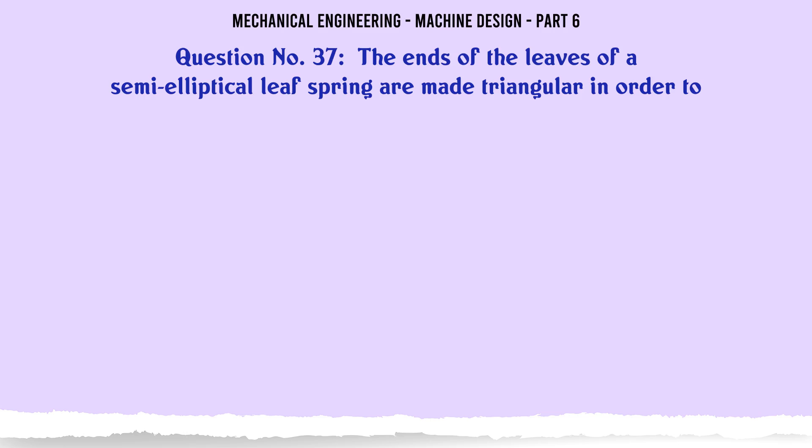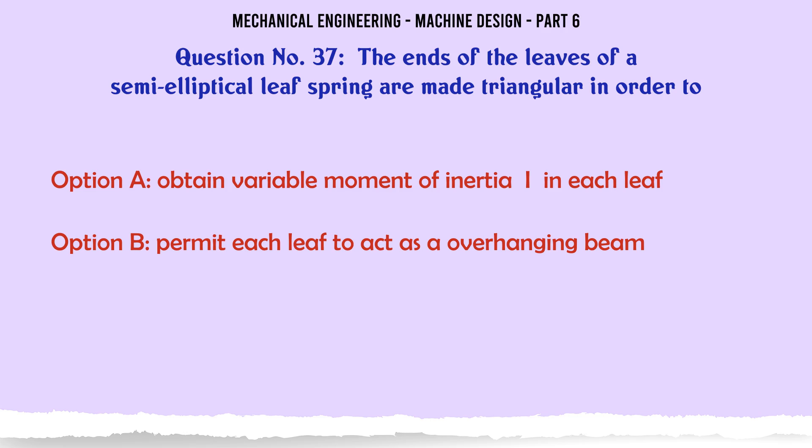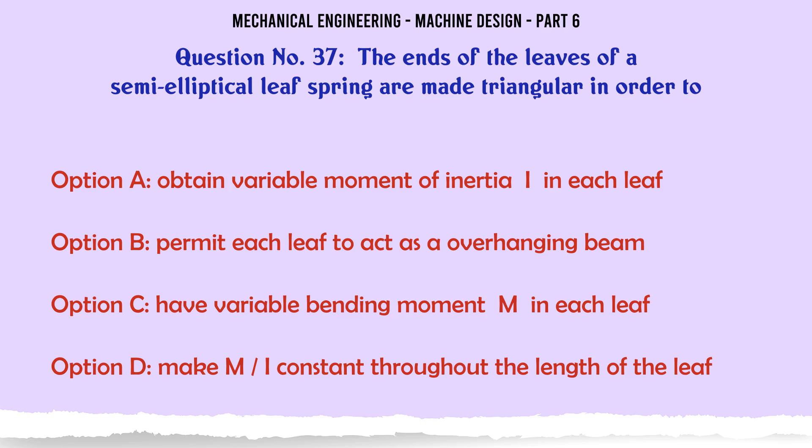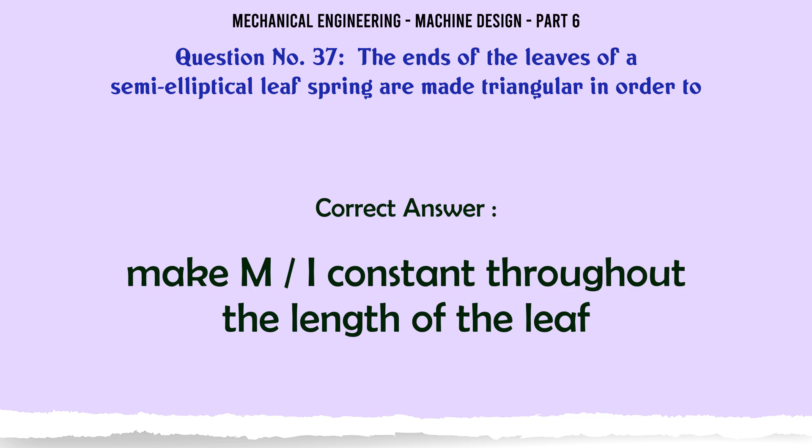The ends of the leaves of a semi-elliptical leaf spring are made triangular in order to: A) obtain variable moment of inertia I in each leaf, B) permit each leaf to act as an overhanging beam, C) have variable bending moment M in each leaf, D) make M/I constant throughout the length of the leaf. The correct answer is make M/I constant throughout the length of the leaf.